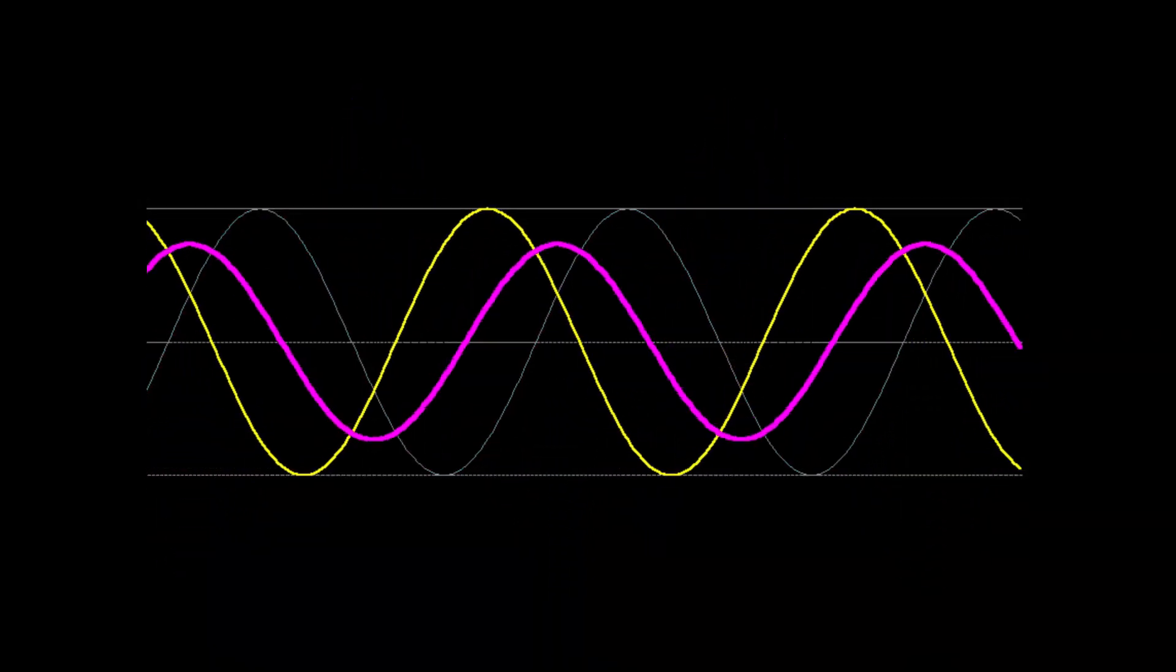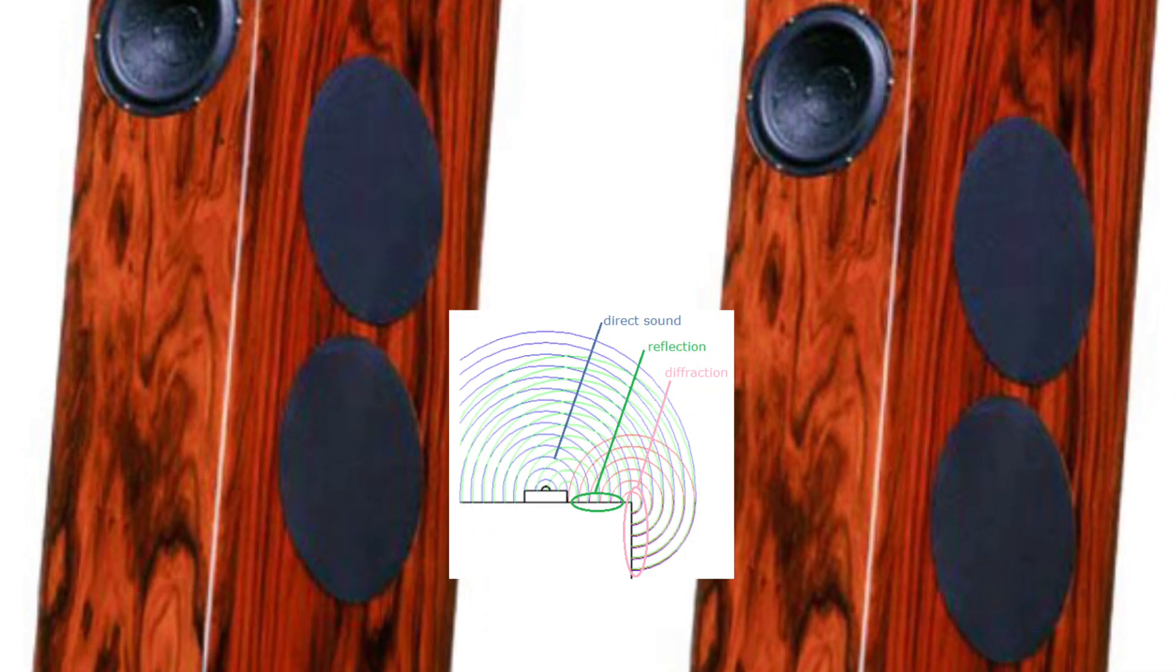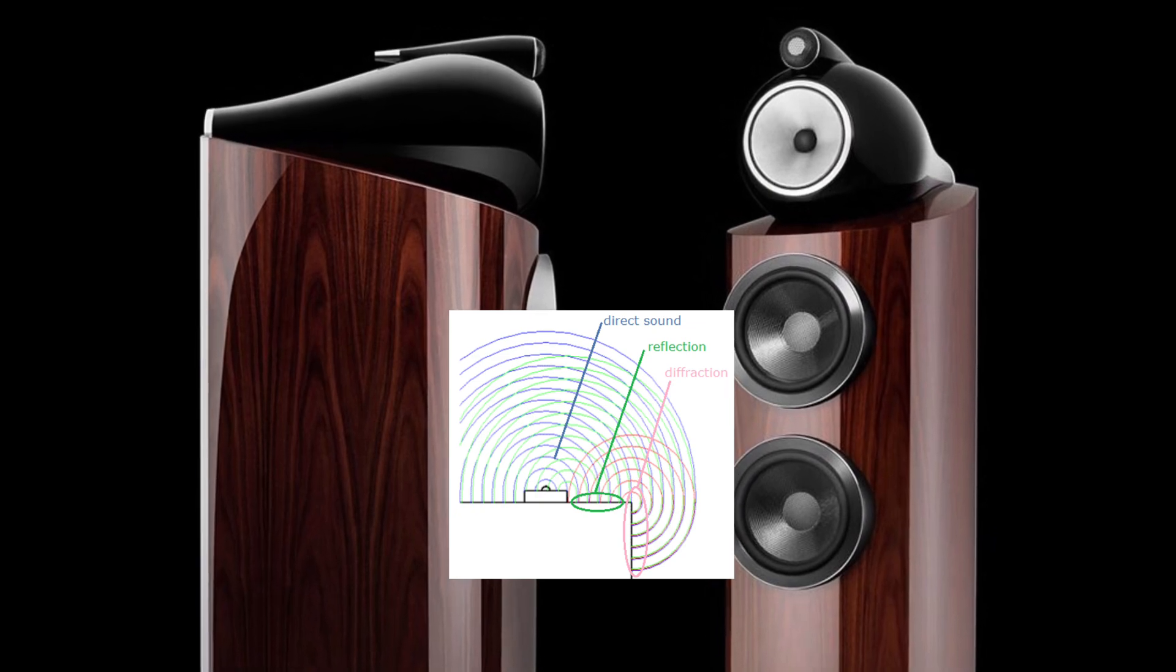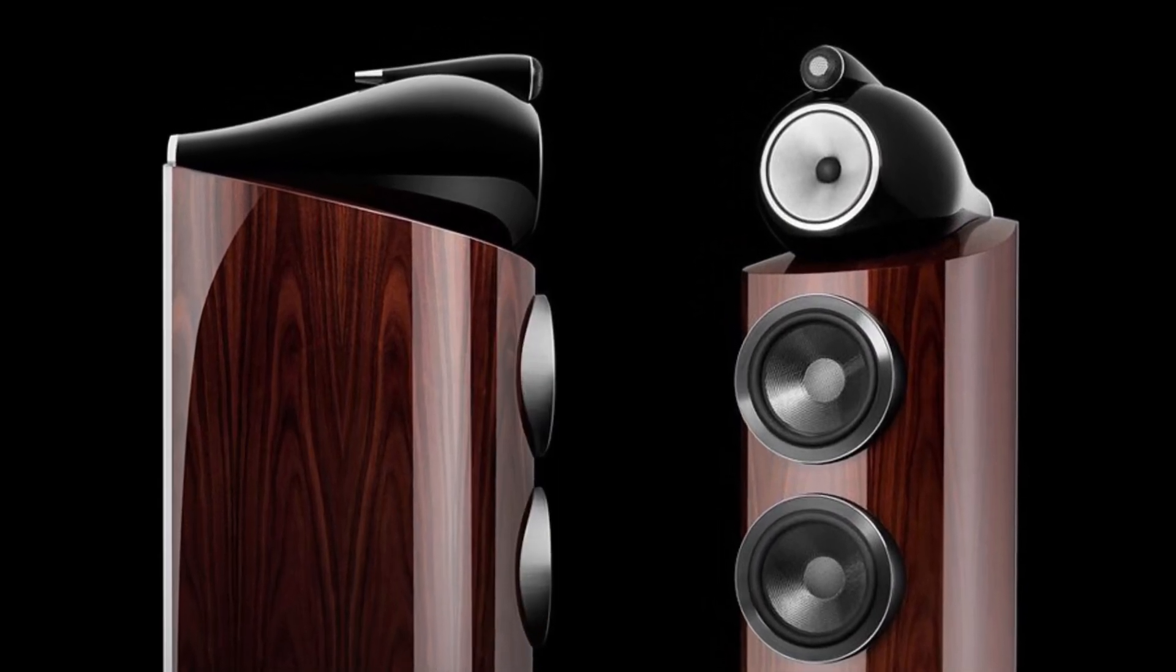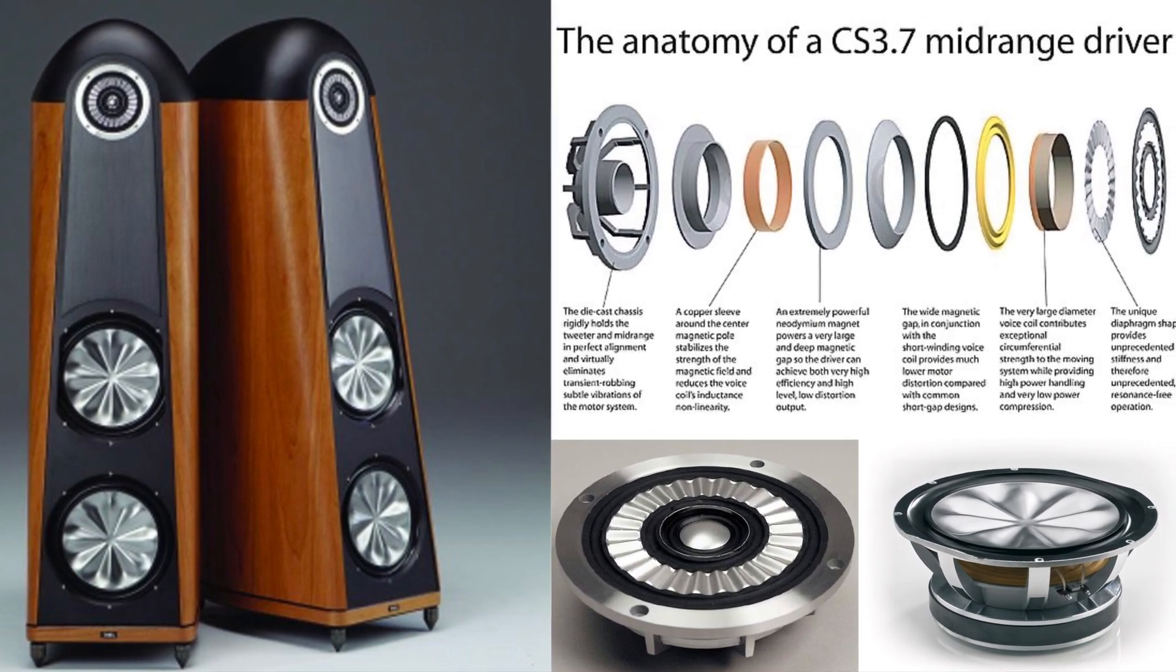Higher frequency will have shorter wavelength. When the wavelength is shorter than the speaker baffle dimension, it will have reflection from the speaker baffle surface and diffraction from the speaker baffle edges. This is why for the modern speaker designs, they normally will use narrower speaker enclosure and rounded edge to minimize these impacts.